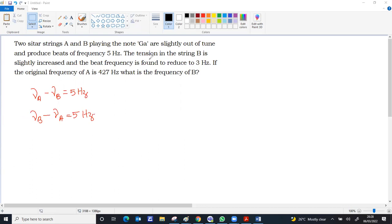Now, tension in the string is slightly increased. The frequency of the nth mode of a string is equal to 1 by 2L root of T by mu. If tension is increased, naturally frequency has to increase, the other factors remaining the same. So here, tension of string B is slightly increased. Tension of B increases, so frequency of B also increases.